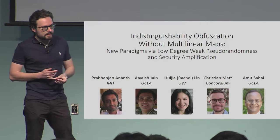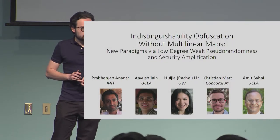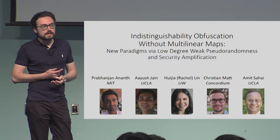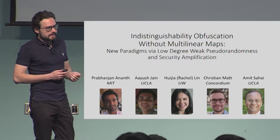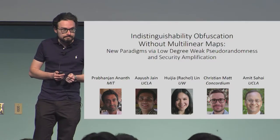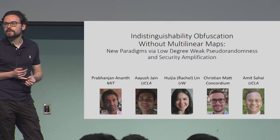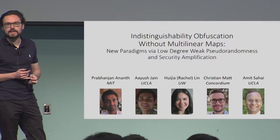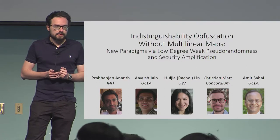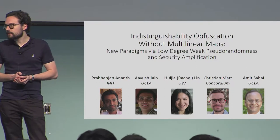This talk is about a merge of two papers: the first by Prapanshan, Ayush, and Amit, and the second by Rachel and me. I'll start the presentation and then hand over to Ayush for the second part. The goal of both papers was to construct indistinguishability obfuscation without relying on multilinear maps, and they both introduce a new type of pseudorandomness and use security amplification.